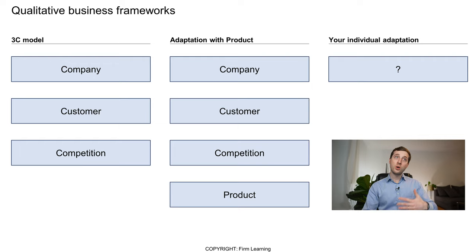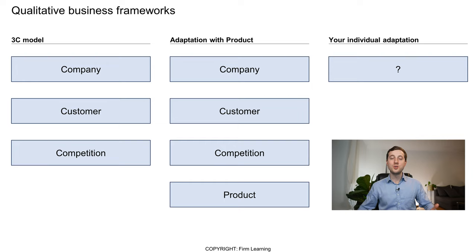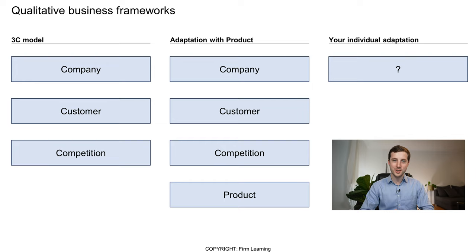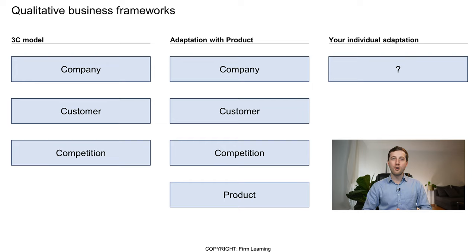One very well-known framework is the 3C framework: company, customer, competition. For the company, you'd look at employee capabilities, the organization, countries they're active in, product portfolio, and pricing. For customers, you'd examine different customer segments, their preferences, and which segments are growing or declining. For competition, you'd look at market share, how it differs by region, how your products compare, and what differentiating USPs you have — just a few factors you can always go over in these situations.